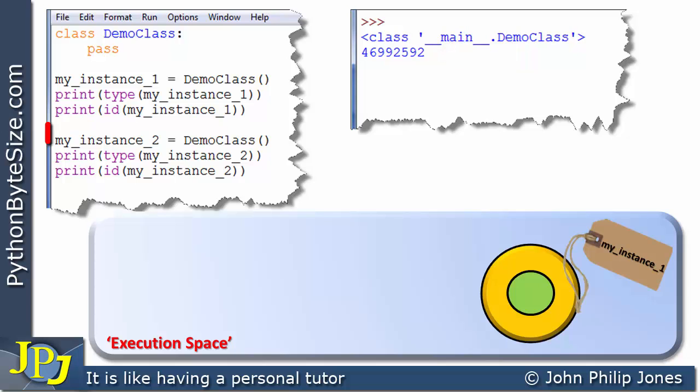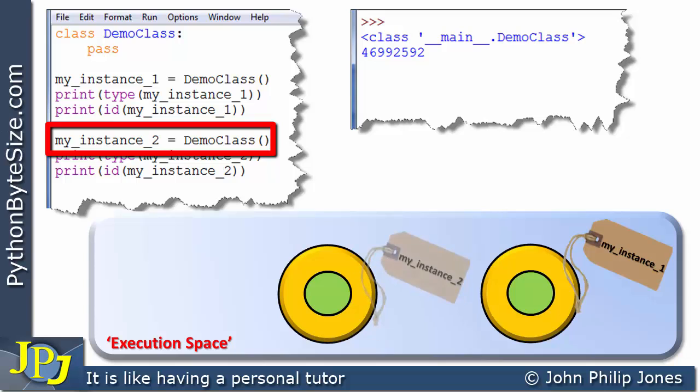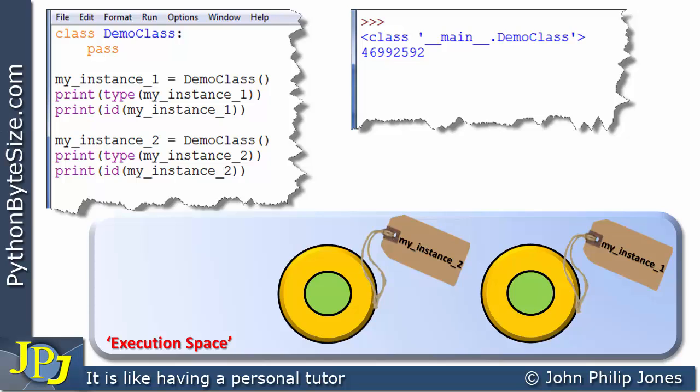If I now come on to this line, well this is to print the type of my_instance_2, DemoClass. And I'm going to see that in this statement here. And of course this tells that it's a class of type DemoClass.